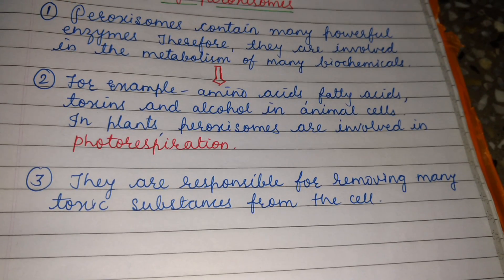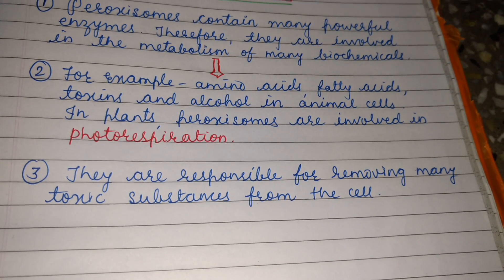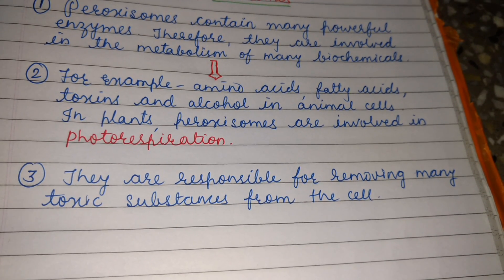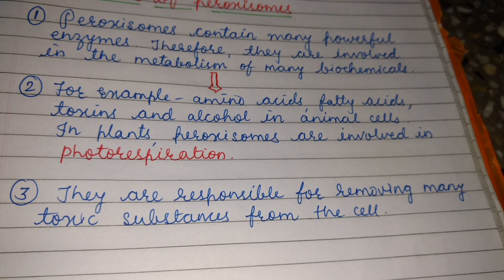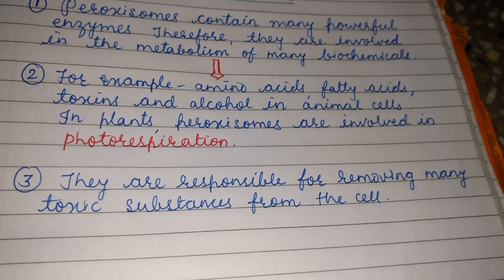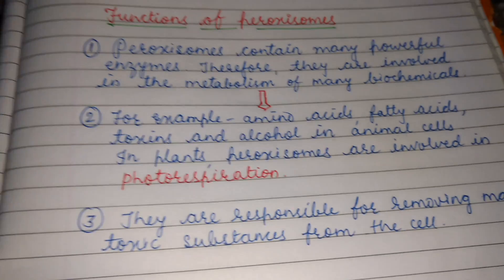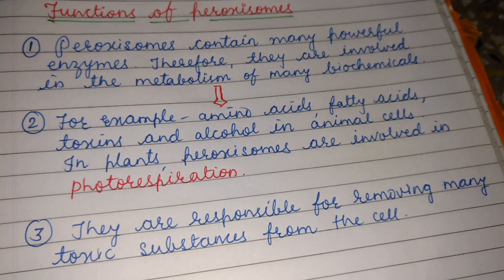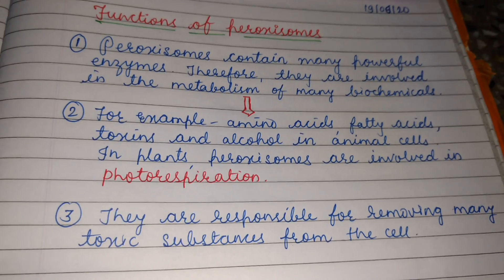The third function of peroxisomes is that they are responsible for removing many toxic substances from the cell. So here we have completed the topic of peroxisomes. Now we will see some basic differences between plant cell and animal cell.